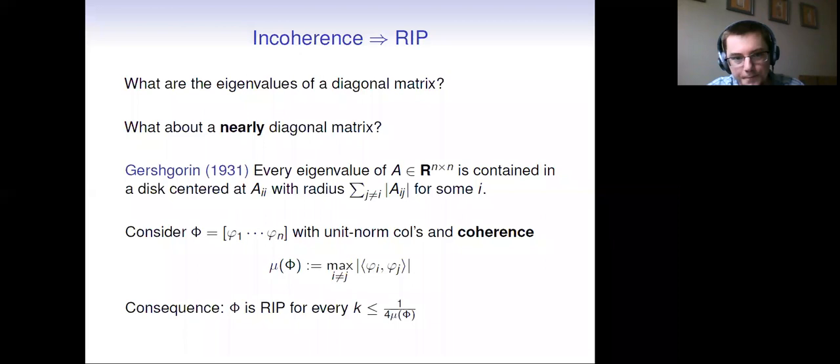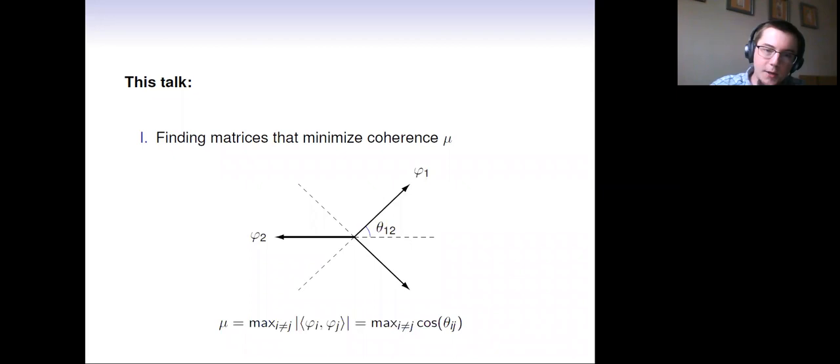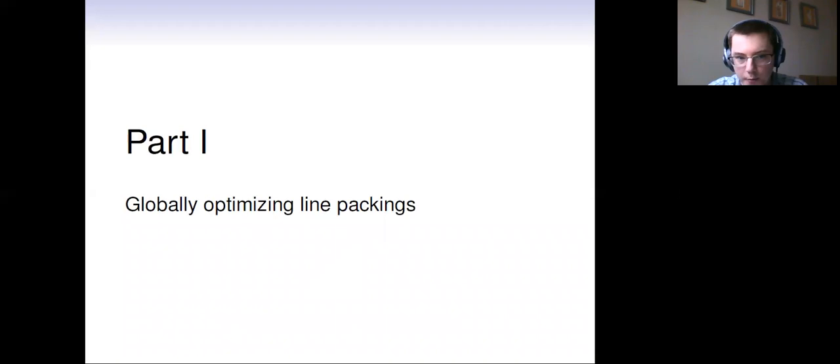If you build yourself a short fat matrix with unit norm columns and you measure the coherence, the maximum absolute value of these phi i, phi j inner products, the consequence that Gershgorin allows for is that phi is going to be RIP for every K all the way up to one over four times the coherence, where the four shouldn't be taken too seriously. The point is, as you lower the coherence, the lower you can get that coherence, the higher you can take that parameter K, the better your matrix is in terms of RIP.